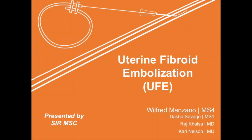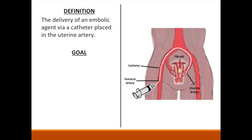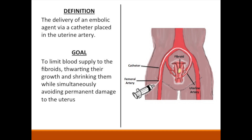Today, we'll be going over uterine fibroid embolization, commonly abbreviated as UFE. UFE is the delivery of an embolic agent via a catheter placed in the uterine artery to treat symptomatic uterine fibroids. The goal is to limit blood supply to the fibroids, throttling their growth and ultimately shrinking them, while simultaneously avoiding permanent damage to the uterus.